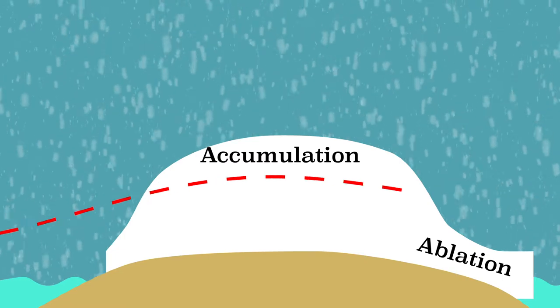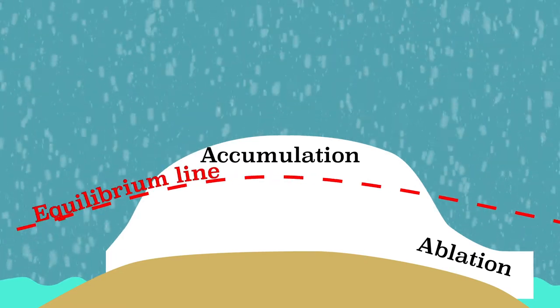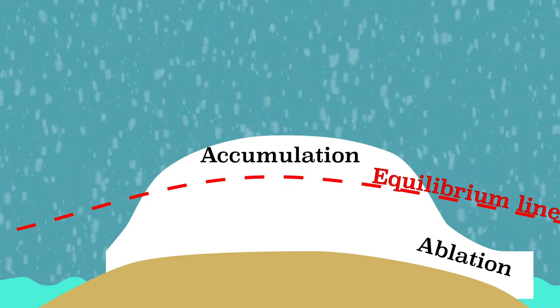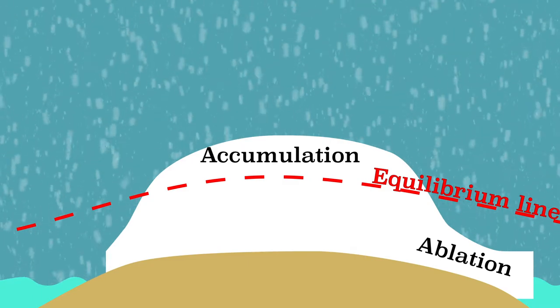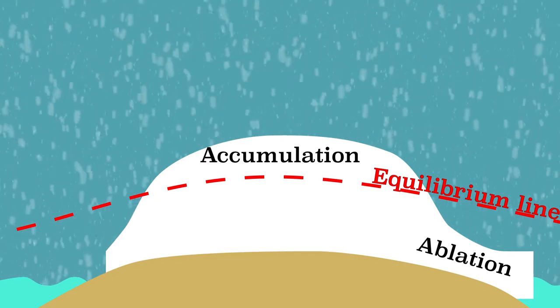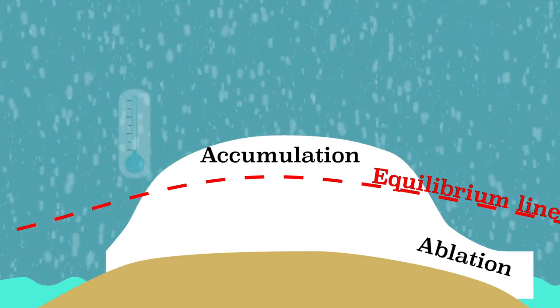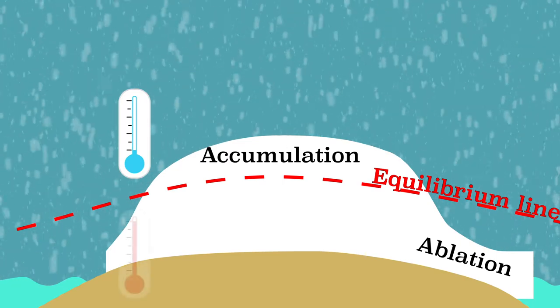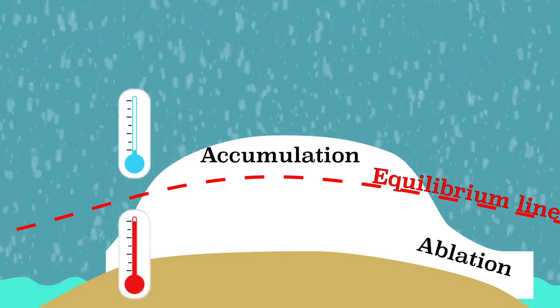The boundary between the accumulation and ablation zone is called the equilibrium line. The ice sheet does not grow or shrink here. The higher in the atmosphere, the colder it is. This also applies to the ice sheet. Therefore, there is accumulation higher on the ice sheet because here it is colder and therefore snow falls. The edge of the ice sheet is lower, so it is warmer there.